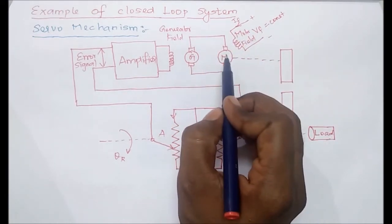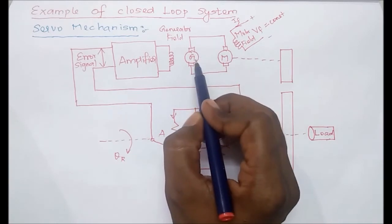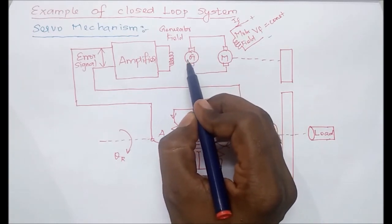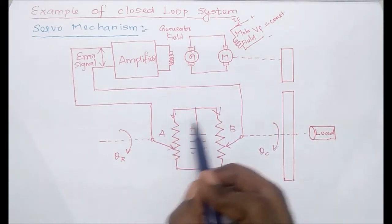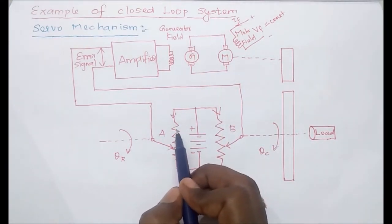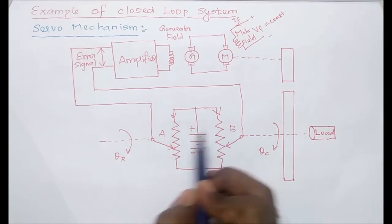We are going to vary the armature voltage of this motor according to the armature voltage generated by this generator. Motor speed will vary. This is a potentiometer. The resistance value of this and this, A and B, are the same.